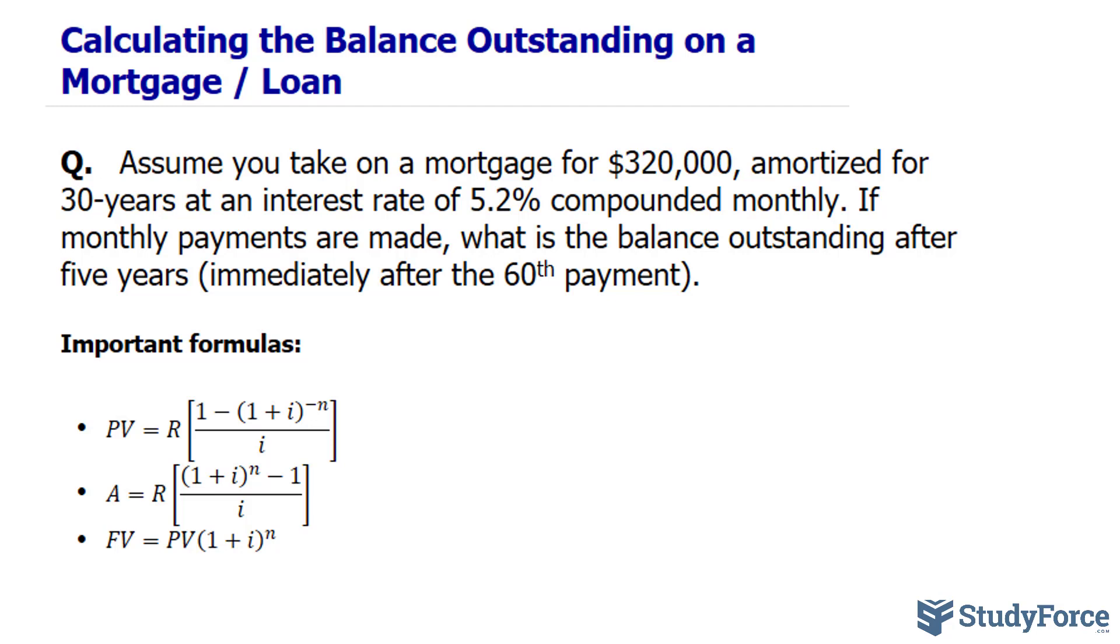Now the very first thing that you want to do here is find out the amount that you're paying per month. And we can do that by solving for R in the very first formula. So our present value is $320,000. R will represent each month's payments, and for now we don't know what that is.